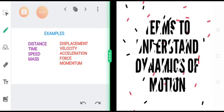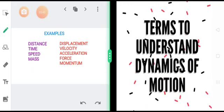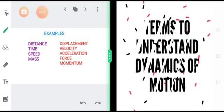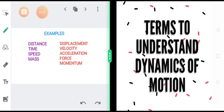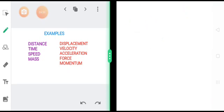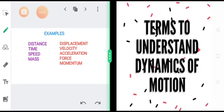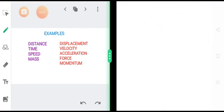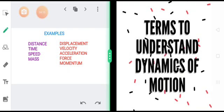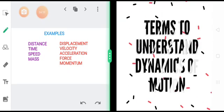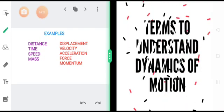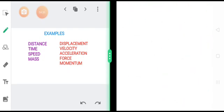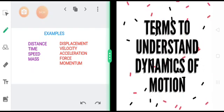Let us understand this a bit more. For instance, if you are asked the distance between two cities — say city A and city B are at a distance of 60 km — do we ever need to mention the direction? If you are moving from Delhi to Jaipur and back, the distance remains the same if you follow the same path. Whether going or returning, it stays 100 km. It is not at all dependent on the direction in which you are travelling.